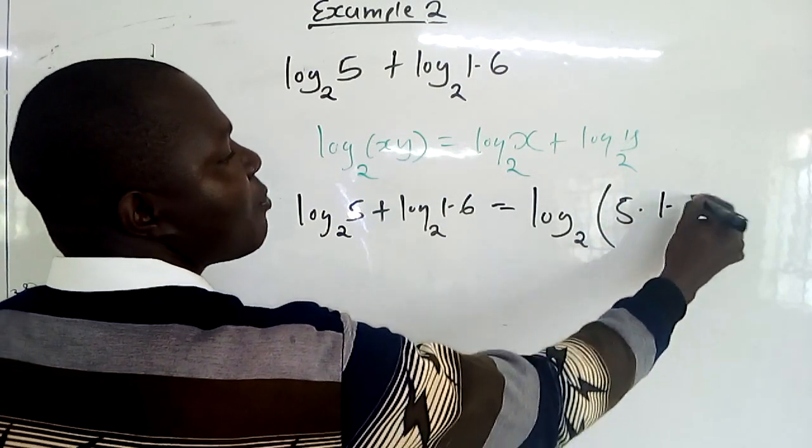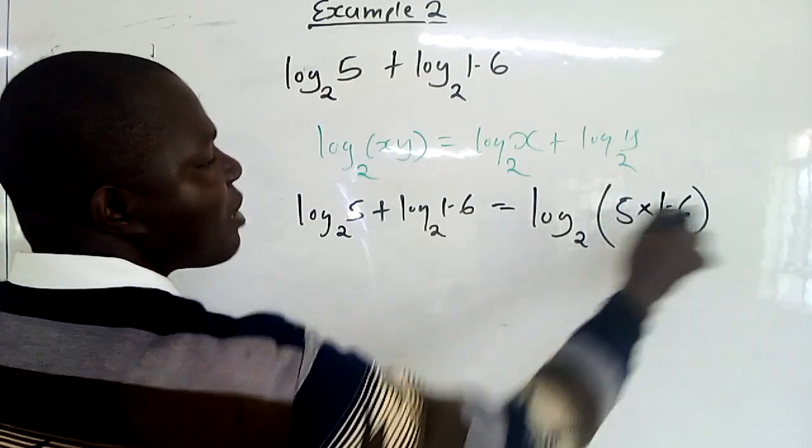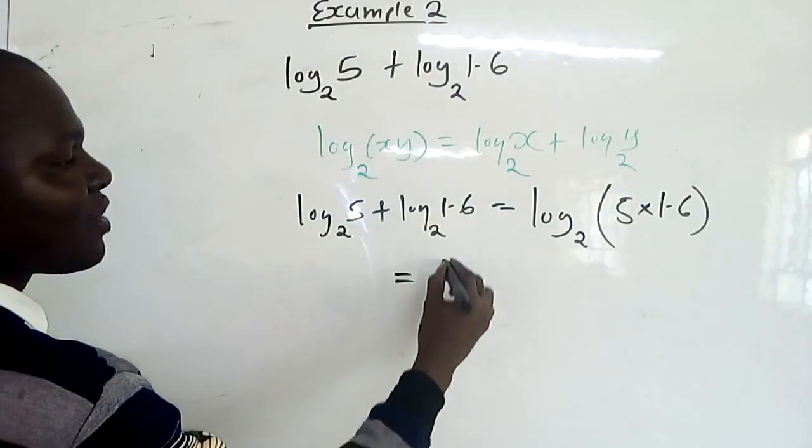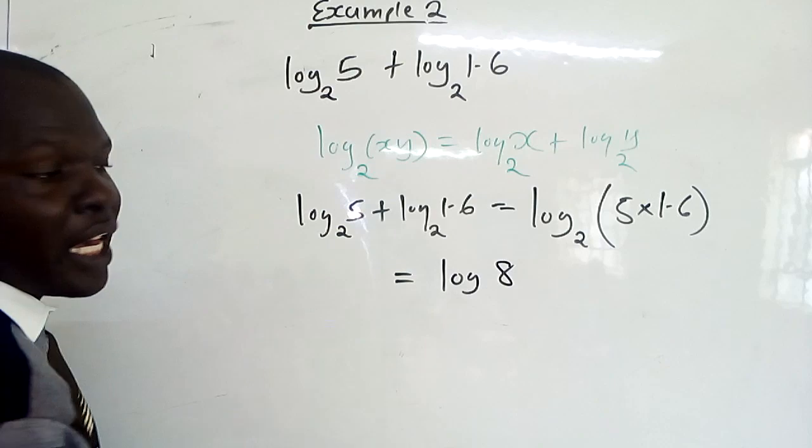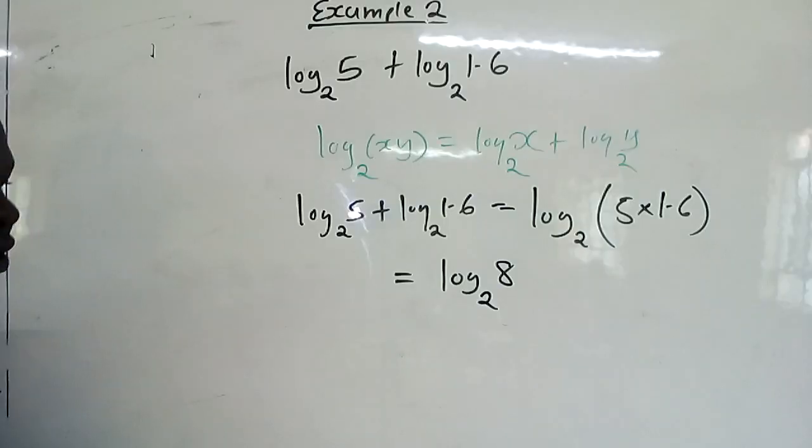Inside, we have 5 times 1.6. Then you end up with log₂8, since 5 times 1.6 is 8.